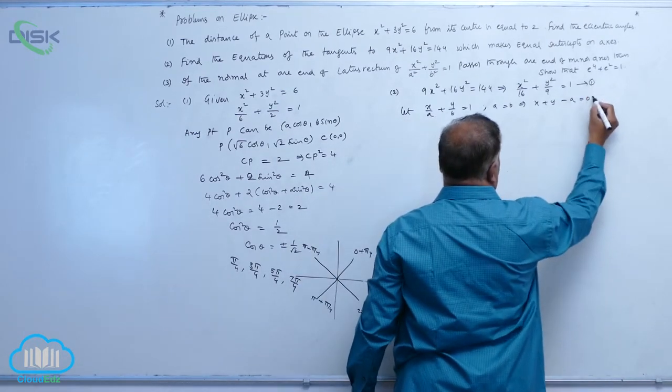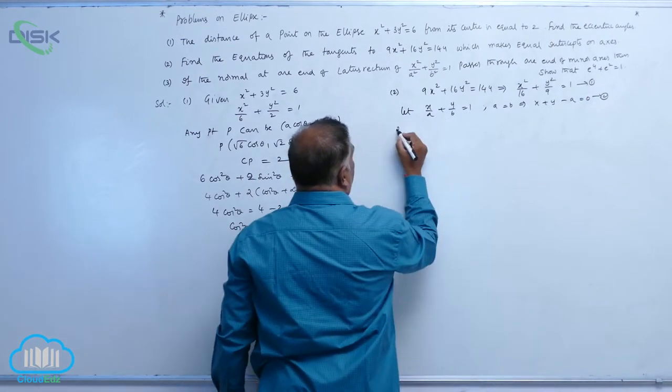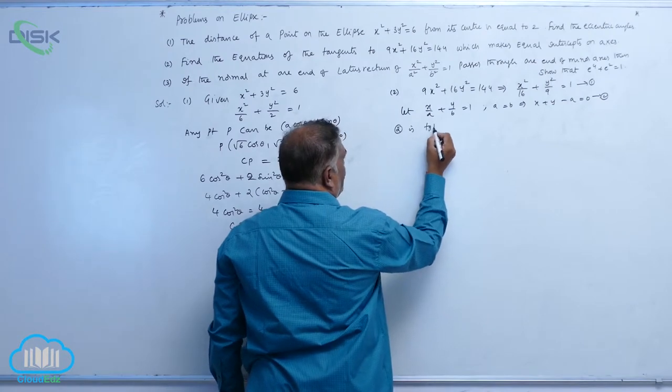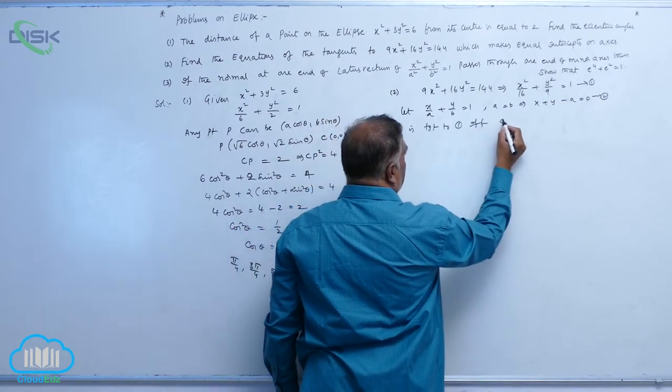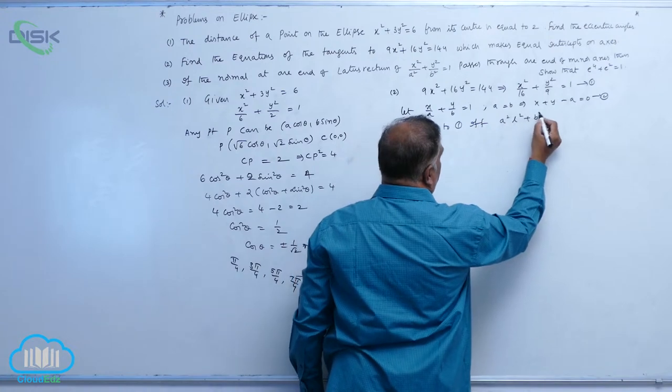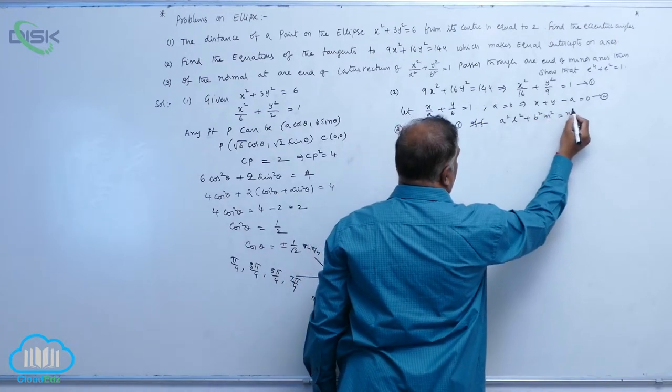Call it equation 1, this is 2. Now 2 is tangent to 1 if and only if a square l square, b square m square is equal to n square.